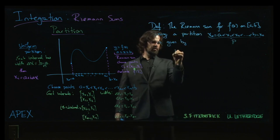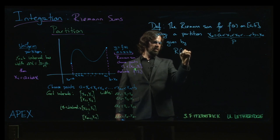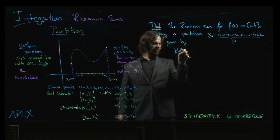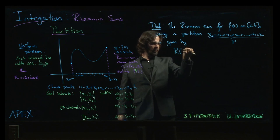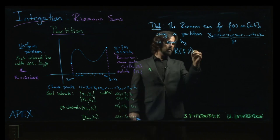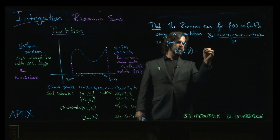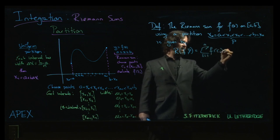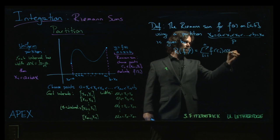is given by, and sometimes when we give this partition a name, you might call it p. So it's the Riemann sum for f with partition p, and it's going to be the sum, i going from 1 to n, f of ci delta xi.